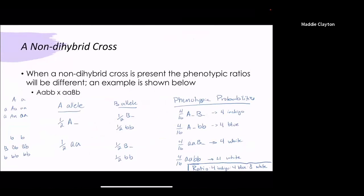However when you don't have a dihybrid cross present you're going to end up with a different set of ratios than when you have the heterozygous. In this case you have a half chance of getting the dominant A allele and a half chance of being all recessive and then the same for the B allele. When you take this into the phenotypic probabilities you have four sixteenths chance of getting any of the four genotypes.